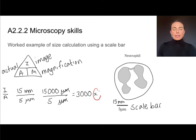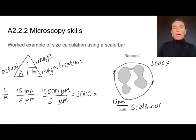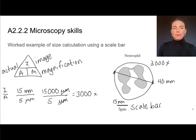You can either include the 'x' as a unit or leave it off — magnification doesn't really have any units. Now that I know this image has been magnified 3000 times, I can use that information to find something like the diameter of this cell. I would get out my ruler and measure the diameter of that cell, and let's say when I do that it's something like 40 millimeters. Going back to my magnification triangle, in this case I want to find the actual size of that cell.